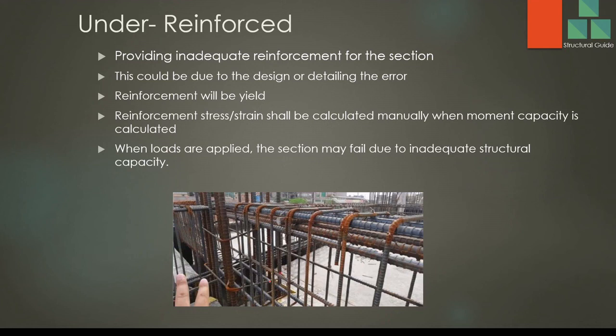We also have to keep in mind that in such a situation, if we want to calculate the bending capacity of the section, that also has to be done manually. Because most of the equations given in the codes are based on the assumption that reinforcement has yielded. If the reinforcement has not yielded, you have to manually calculate the bending capacity, since the strain has not reached the yielding point.